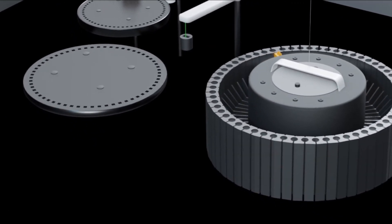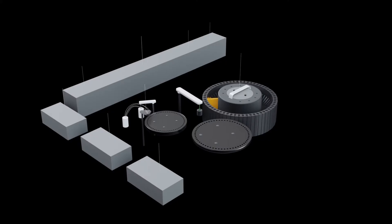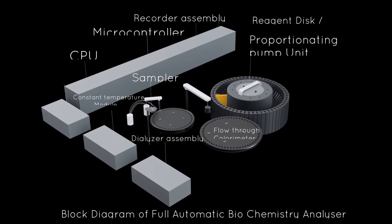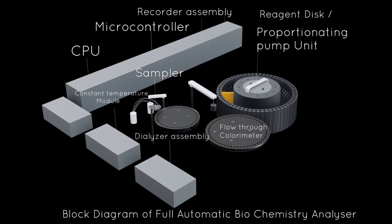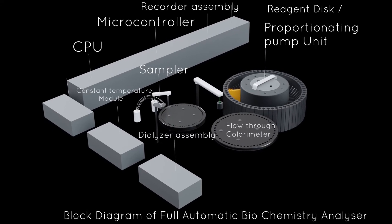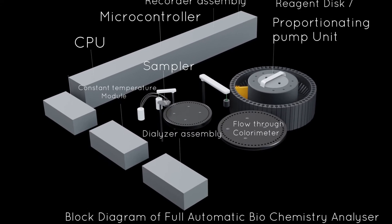The next component is the constant temperature module. It is to maintain the reaction mixture at a constant temperature for a defined time to bring about the required chemical change under controlled conditions.